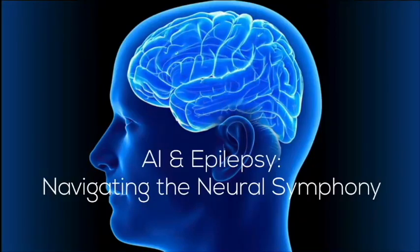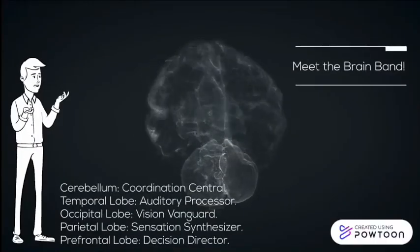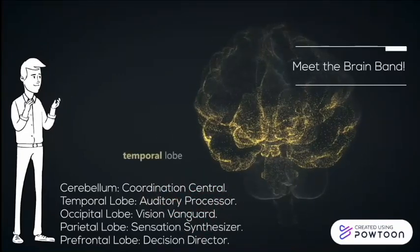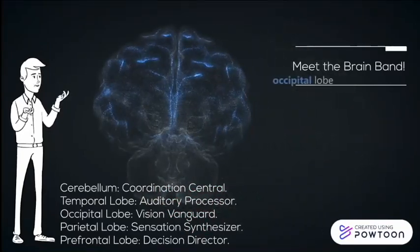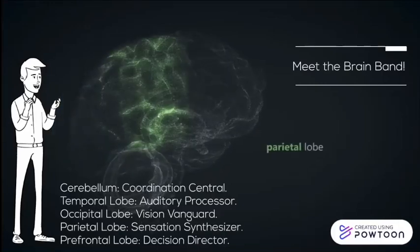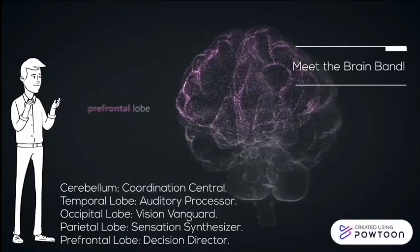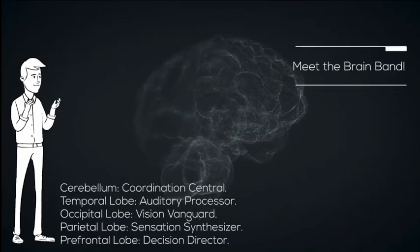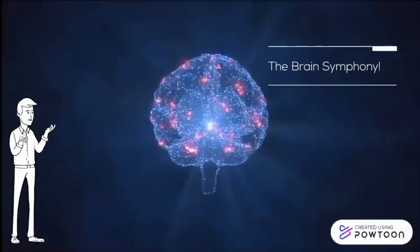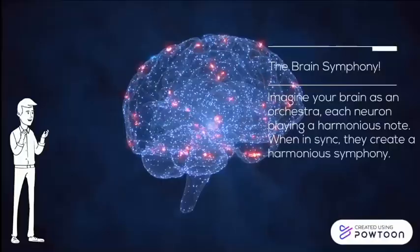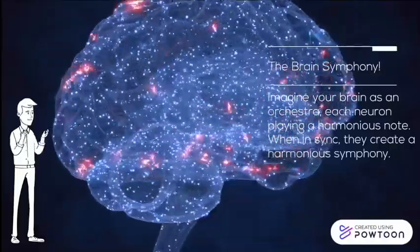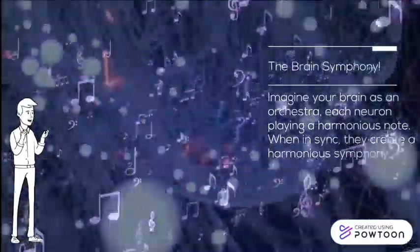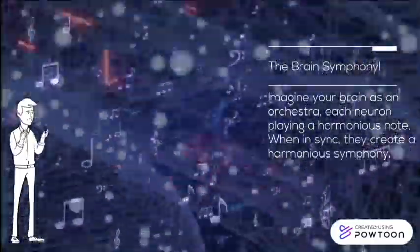Now let's meet the brain band: the cerebellum, the rhythm keeper; the temporal lobe, the melody maker; the occipital lobe, the visionary processing all visuals; the parietal lobe, the multitasker of sensations; and the prefrontal cortex, the conductor responsible for decision-making. When all these parts of the brain perform in harmony, they create a beautiful symphony — like a well-rehearsed orchestra where every player knows its part and when to play it, leading to smooth brain function and seamless coordination.